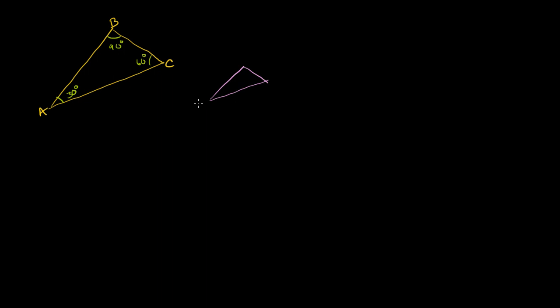We already know that if all three corresponding angles are congruent to the corresponding angles on ABC, then we know we're dealing with similar triangles. So for example, if this is 30 degrees, this angle is 90 degrees, and this angle is 60 degrees, and we have another triangle where the corresponding angles are also 30, 90, and 60 degrees, we know that triangle XYZ is going to be similar to ABC.